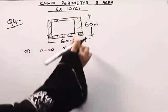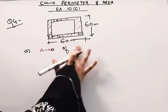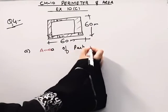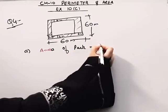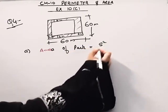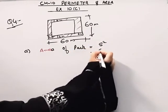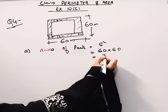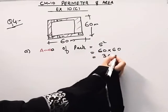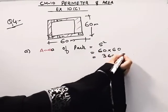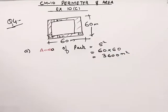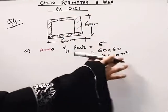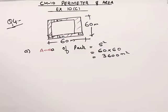So the area of the outer square will be side squared — this is 60 into 60, which comes out to be 3600 meter square. So the total area of the park is 3600.